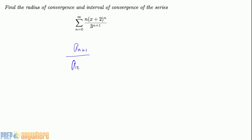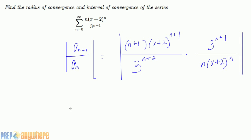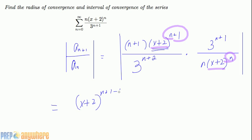Find the radius of convergence and interval of convergence for this series. Applying the ratio test, a_(n+1) over a_n: a_(n+1) is (n+1)(x+2)^(n+1) over 3^(n+2), multiplied by the reciprocal 3^(n+1) over n(x+2)^n. Combining: (x+2)^(n+1-n) = (x+2)^1, and 3^(n+1-(n+2)) = 3^(-1) = 1/3, with (n+1) over n.